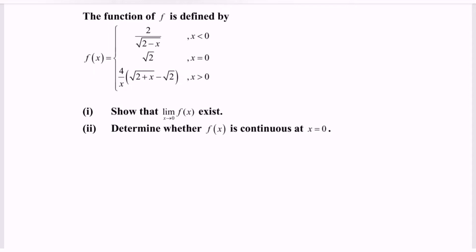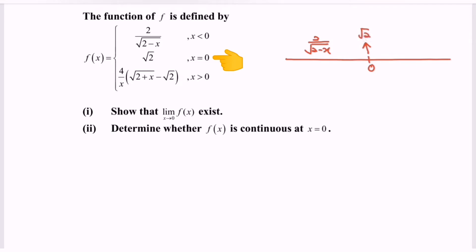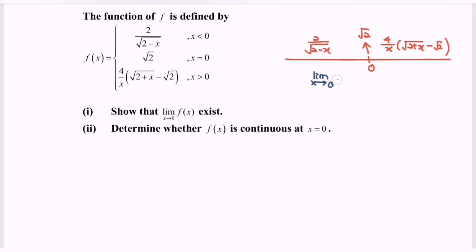Show that the limit when x approaches 0 for the function f(x) exists. Before we begin the discussion, kindly illustrate the situation on a number line. Based on the piecewise function, for the left-hand side we have 2 over square root of 2 minus x. At 0, the function will be square root of 2, followed by 4 over x multiplied with square root of 2 plus x minus square root of 2. First, we have to show that the limit when x approaches 0 for f(x) exists. Second, we have to determine whether the function f(x) is continuous at x equals 0.